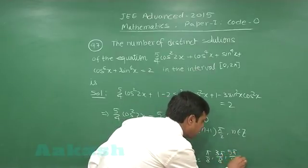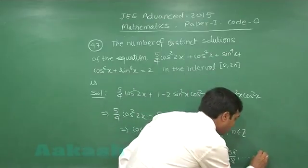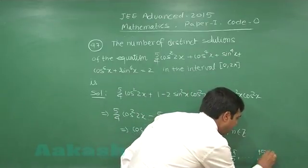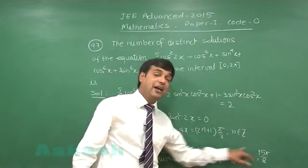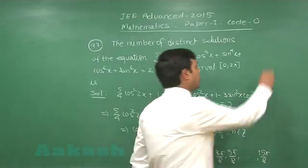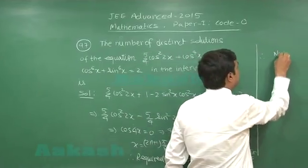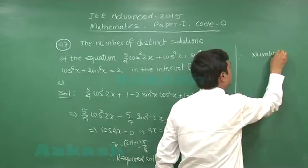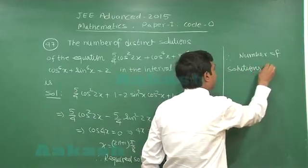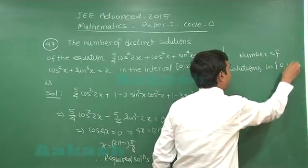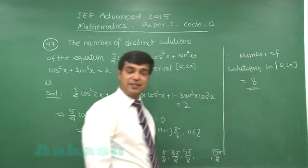Continuing, we get solutions π/8, 3π/8, 5π/8, and so on up to 15π/8. In this manner we observe there are a total of 8 solutions of this equation in the interval [0, 2π]. Therefore, the number of solutions in 0 to 2π equals 8.